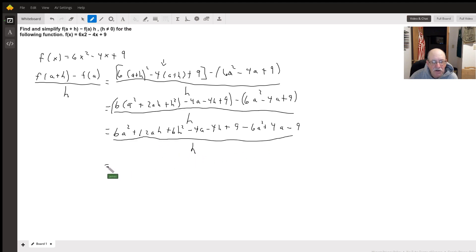Now we've got stuff that's going to cancel out. Let's see. I've got 6a squared minus 6a squared, those cancel out. I've got negative 4a plus 4a, those cancel out. I have 9 minus 9, those cancel out.